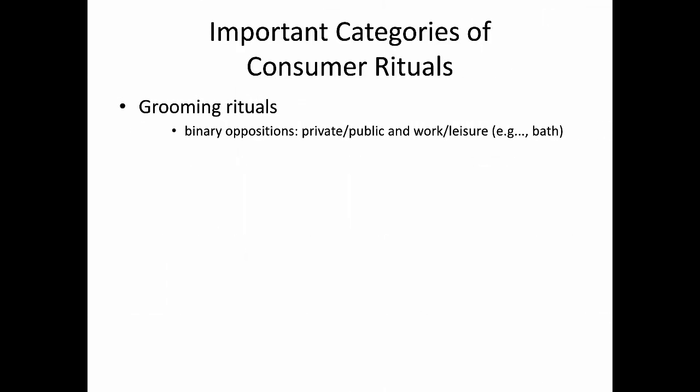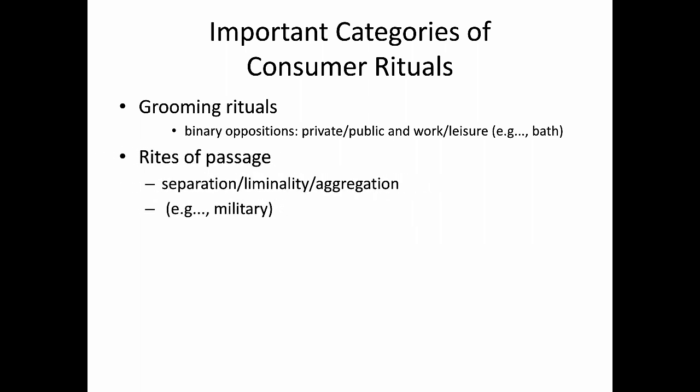We can talk about different categories of consumer rituals, as your chapter does. The chapter talks about grooming rituals, for example — again, this idea of binary opposition. When you do a grooming ritual, you're moving from private to public. We talk about putting on your face, putting on your makeup in some cases, going out into the world, and then coming back at night — maybe taking off your work clothes, putting on your pajamas, or transitioning from work to leisure. Taking a bath, for example, is very common to have that kind of ritual element.